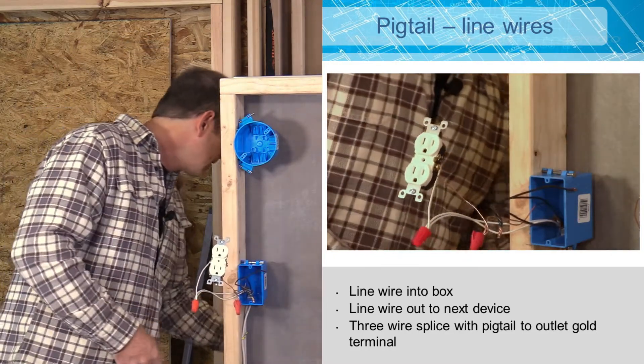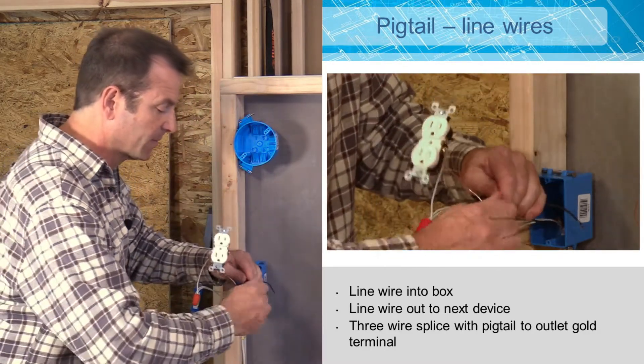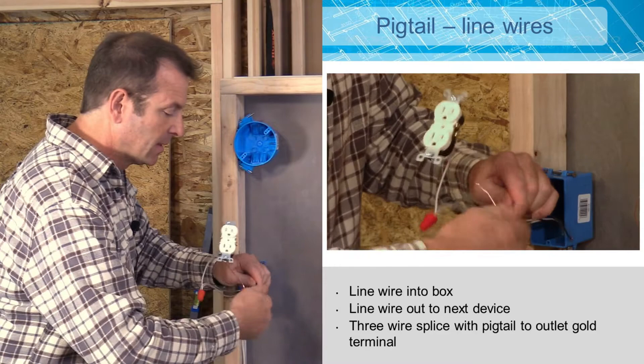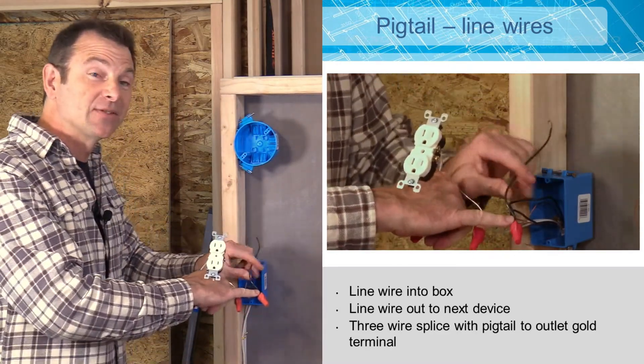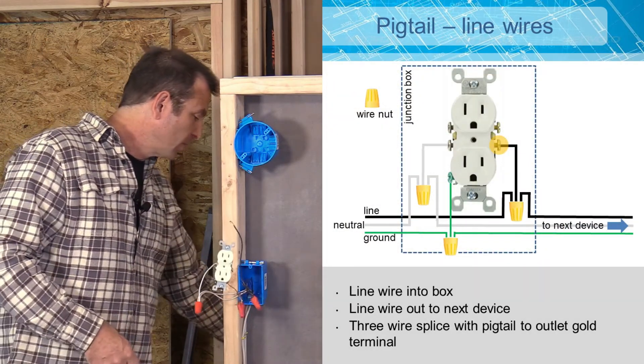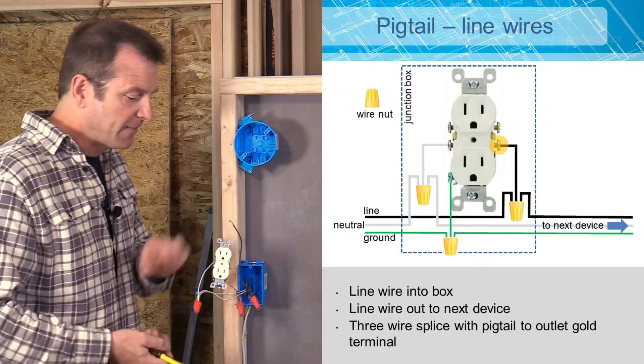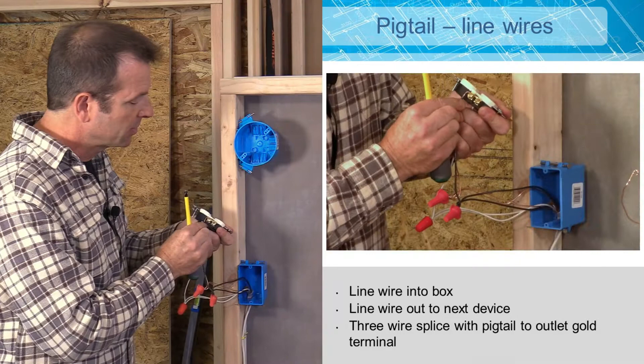Clip the end clean, add a wire nut, and we're ready to connect this terminal. Make sure with all of your wire-to-wire connections, you don't have any bare wire exposed outside of this wire nut. So we'll go ahead and make our final connection to our terminal.